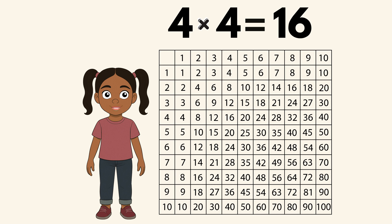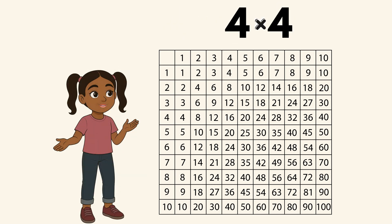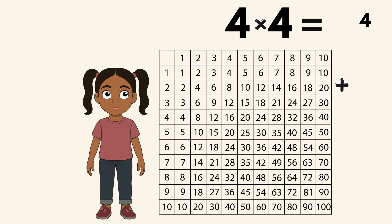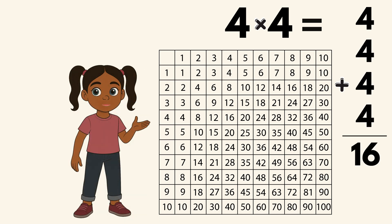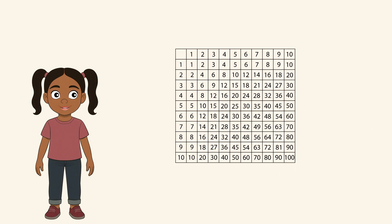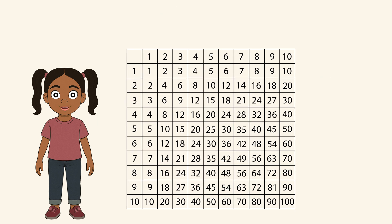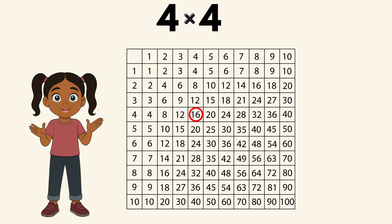Four multiplied by four equals sixteen. Four multiplied by four is the same thing as four plus four plus four plus four, which equals sixteen. But did you know there's an easier way to do this using the multiplication chart? The multiplication chart helps us multiply. For example, four times four — first you find four on the horizontal line, then you find it on the vertical line, and you keep going until they meet. Once they meet, you get your answer.